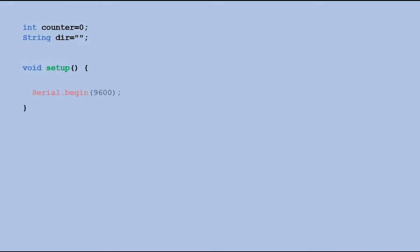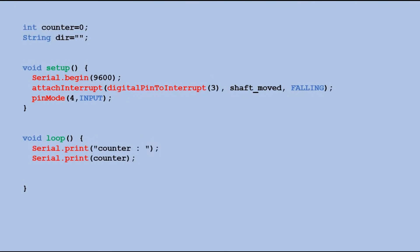In setup we open the serial port and declare the interrupt at pin 3 that will execute ISR called shaft moved and it will be executed when the signal at pin 3 would change from high to low. Since we also need information from DT pin we declare it as input. In loop we only send the current values of counter and DIR variables to the serial monitor. Nothing more.